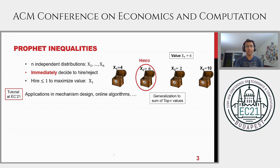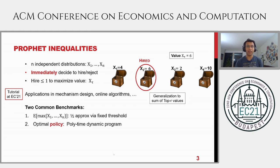This problem has several applications, primarily in mechanism design and online algorithms. There are two common benchmarks for the prophet inequality problem. One is the expected max of all the random variables — think of this as the hindsight optimum. Although you cannot meet this benchmark because you're making decisions without knowing future values, there are simple threshold-based algorithms that get you at least half of this benchmark. This half is also known to be tight.